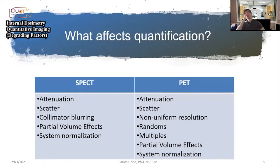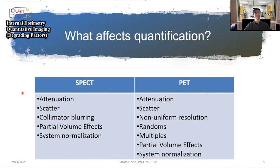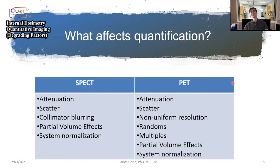So what affects quantification? In SPECT we have issues like attenuation, scatter, collimator blurring, partial volume effects, and system normalization — we've talked about those in previous lectures. In PET, we again have attenuation and scatter, but we also have non-uniform resolution, randoms, multiples, partial volume effects, and system normalization.